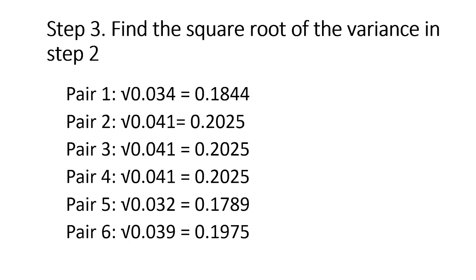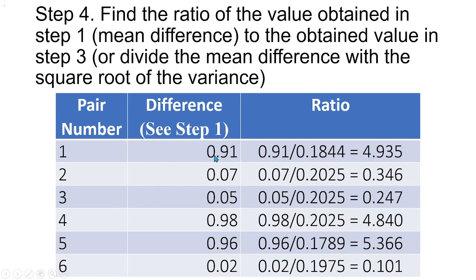All right, then let us proceed to step number 4. In step number 4, we are going to find the ratio of the value obtained in step 1, or the mean difference, these are the mean difference, to the obtained value in step number 3. Or what we are going to do is to divide the mean difference with the square root of the variance. So this is the mean difference, and this is the square root of the variance, so for us to get this ratio, which is 4.935. So, these are the ratio for the other pairs.